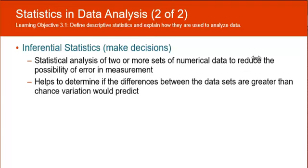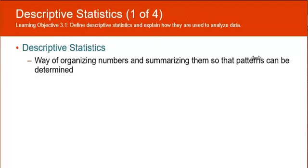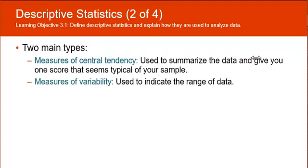Descriptive statistics: it's a way of organizing numbers and summarizing them so that patterns can be determined. There's two main types, and you're probably familiar with most of them. Measures of central tendency give us one score that seems pretty typical of your sample, and the measures of variability which talks about the range of data.